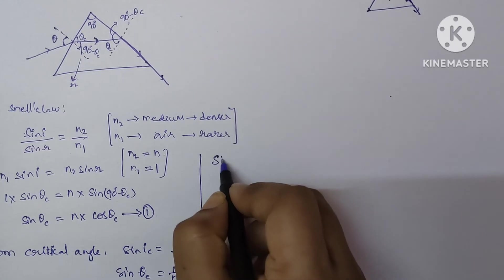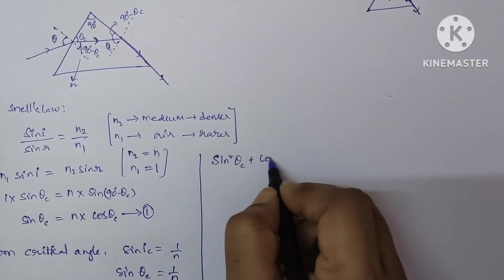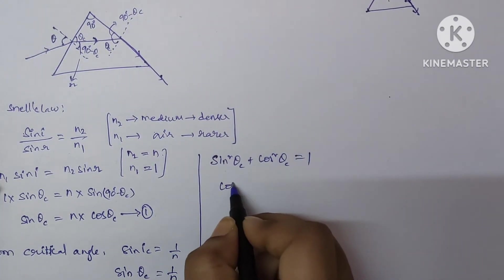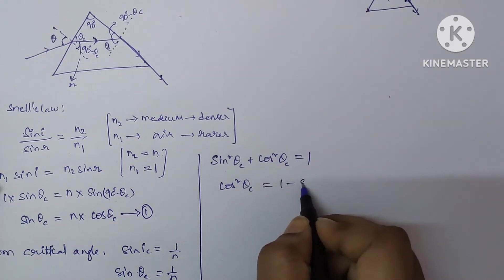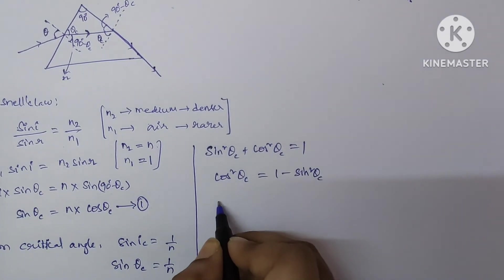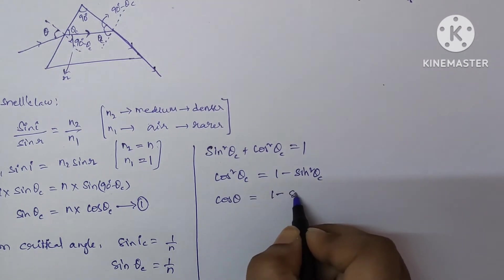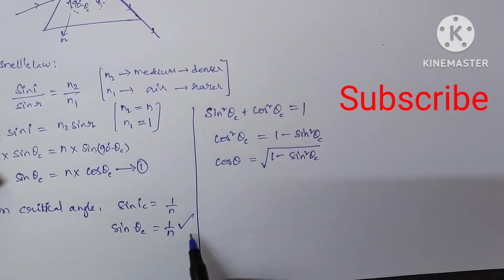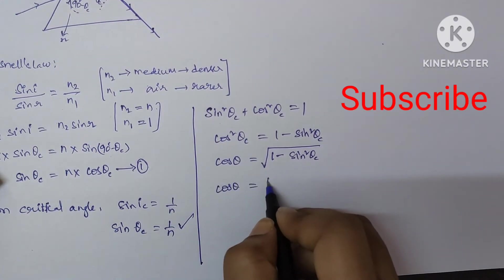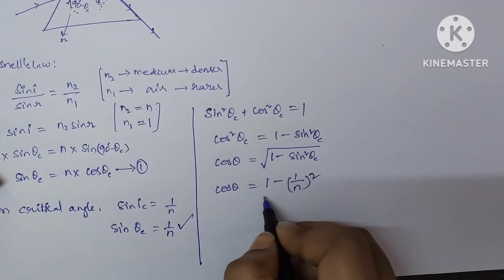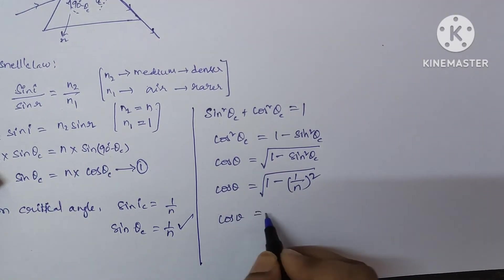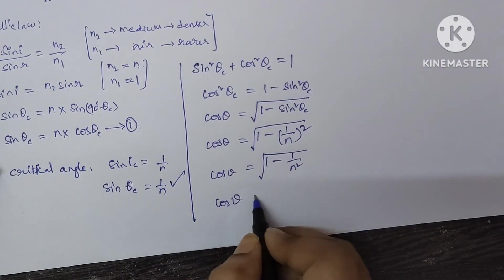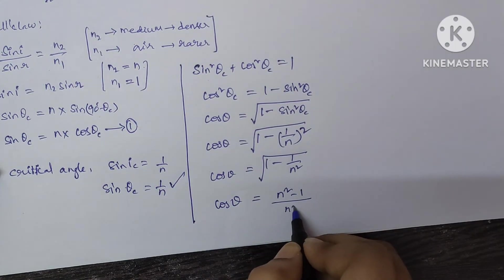Now, from trigonometry, we know that sin square theta plus cos square theta, according to this problem, I am writing as theta c equal to 1. From this, cos square theta is equal to 1 minus sin square theta c under root. We know the value of sin theta c, which is equal to 1 by N. Substitute it here. Cos theta equal to 1 minus 1 by N whole square under root. Now take the LCM.